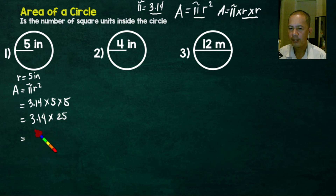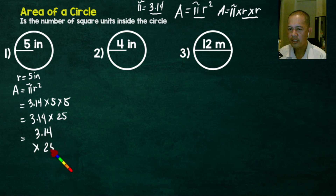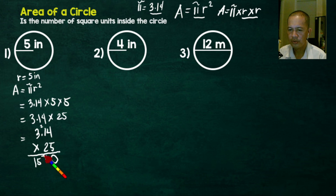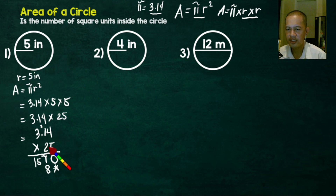We're going to multiply 3.14 by 25 vertically. So we have 3.14 times 25. Multiply by 5: 5 times 4 is 20, carry 2. 5 times 1 is 5, plus 2 is 7. 5 times 3 is 15. Then the second digit, 2: 2 times 4 is 8 — place in the tens position. 2 times 1 is 2. 2 times 3 is 6.